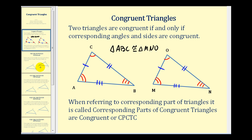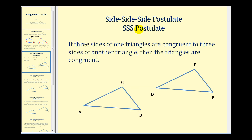Now let's talk about the different ways to prove that two triangles are congruent. The first is the side-side-side postulate, often referred to as the SSS postulate. If three sides of one triangle are congruent to three sides of another triangle, then the triangles are congruent. So if we know those two sides are congruent, those two sides are congruent, and those two sides are congruent, we know that these two triangles are congruent.